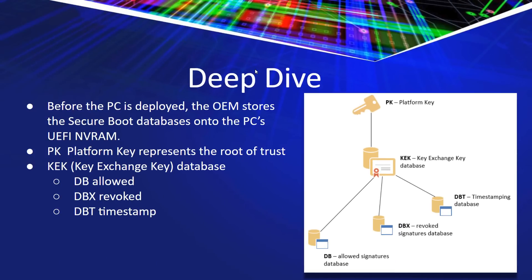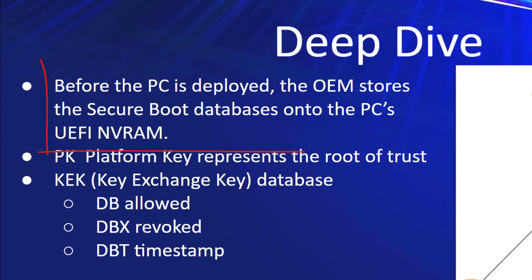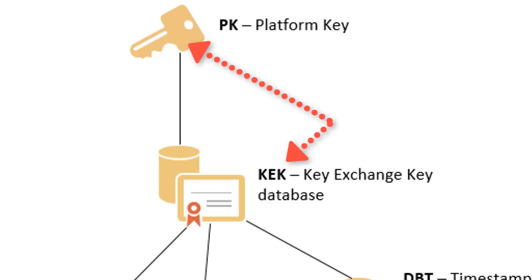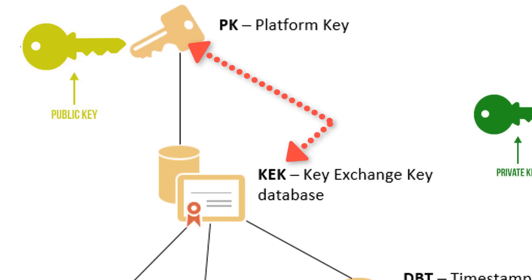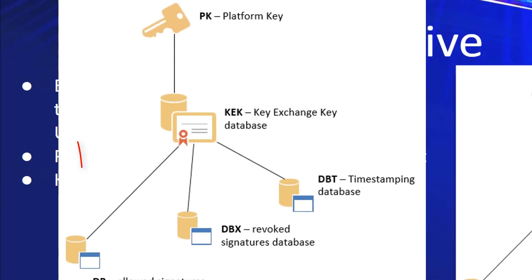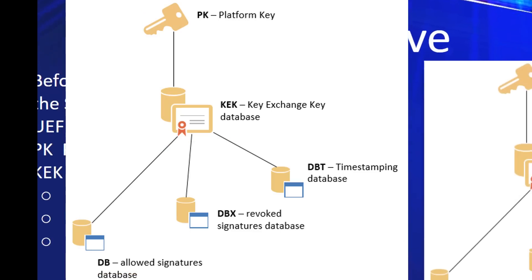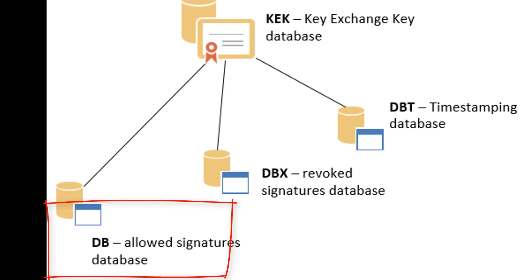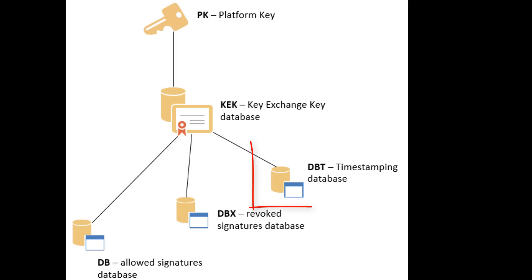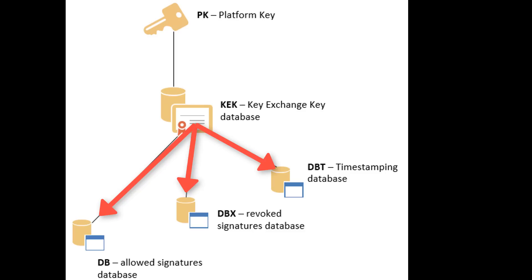Now let's take a deep dive into Secure Boot. Before the PC is deployed, the OEM stores the Secure Boot databases into the PC's UEFI NVRAM. The platform key, or PK, represents the root of trust and is used to protect the KEK — the Key Exchange Key database. The platform vendor puts the public portion of the PK into the UEFI firmware during manufacture; its private portion stays with the vendor. When updating the PK, the new PK certificate must be signed with the old one. Below the Key Exchange Key database are three databases: the Allowed Signature Database (DB), the Disallowed Signature Database (DBX), and the Timestamp Signature Database. The Key Exchange Key database contains trusted certificates that are allowed to modify those databases below. All of these databases are secured by the platform key.